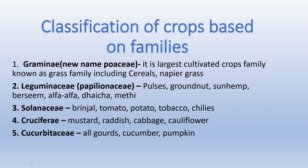Here some families are given along with related crop examples. The first family is Gramineae (Poaceae), which generally includes cereals. Next is the Leguminosae family — as the name indicates, it includes legumes, mostly pulses.